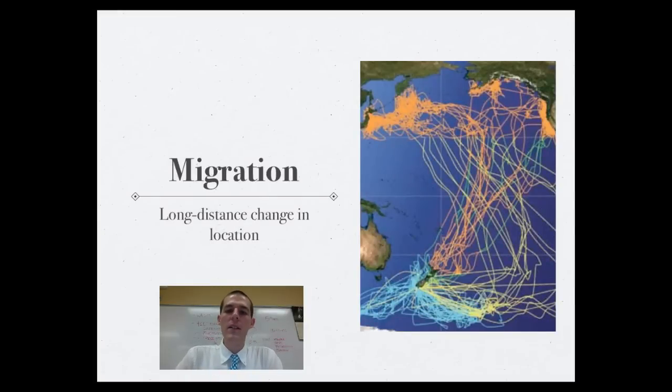So the next behavior I want to talk about is migration. Migration is a long distance change in location. The map there on the right you can see is the migratory patterns of some birds that migrate from New Zealand throughout the Pacific traveling as far as Alaska and Korea and the Americas. There are several birds that will travel over 10,000 miles in their migratory route. Now the stimulus that causes this response would be a change in the seasons. Once that stimulus has caused the response, the birds will respond by migrating.